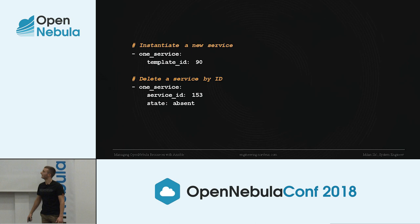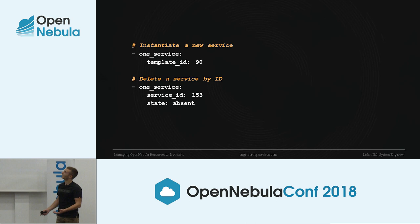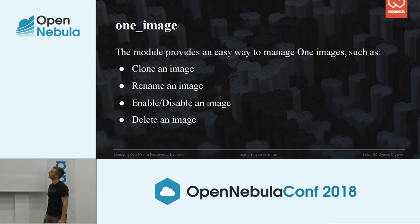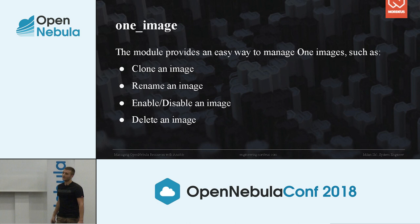The next module is the one_image module, which we can use to manage OpenNebula images. We can use it to clone an image, rename an image, enable or disable an image, or just delete an image. For example, we can rename an existing image by giving it a new name, or we can disable an image with its ID.